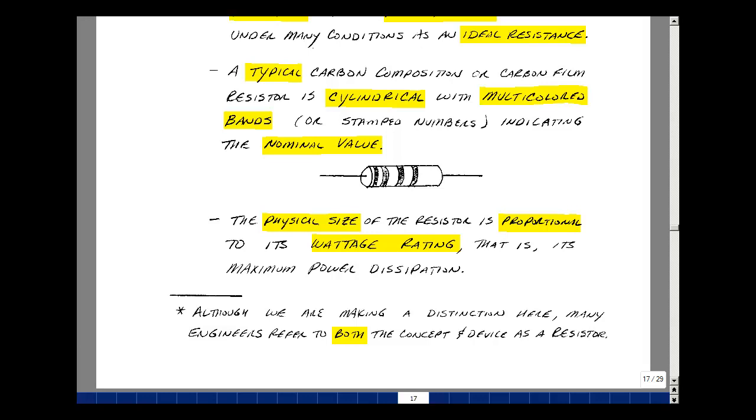Although I've distinguished here between a resistor and a resistance, many engineers just call them both the same thing, but really they are quite different. We'll learn later that a real resistor can be modeled with an ideal resistance and other elements. We'll do the same thing in electronics too.